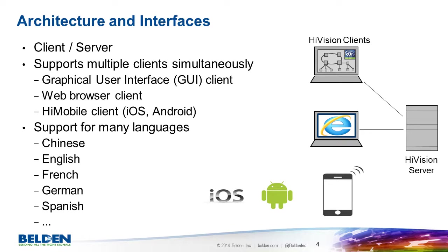In the IT world, English is a dominant language — for example, command line interfaces tend to be in English. In the industrial world, this is far from the case. Automation engineers expect to use interfaces in their own language. So Industrial HiVision supports an increasing number of languages. Importantly, the translations are done by our employees throughout the world or our partners in specific countries, so the translations are accurate and meaningful.